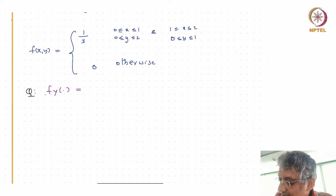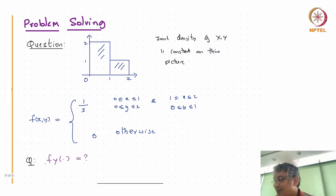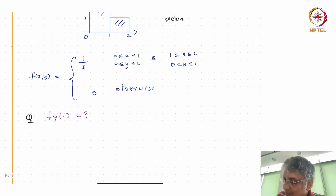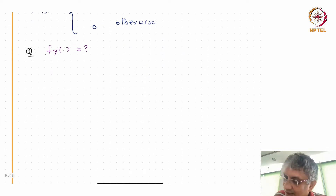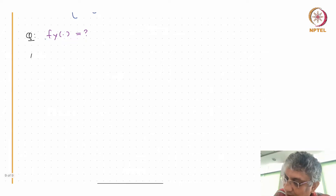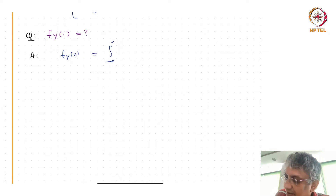It's symmetric in some sense — the picture is kind of symmetric in x and y. So f_Y(y) will be equal to the integral from negative infinity to infinity of f(x, y) dx.